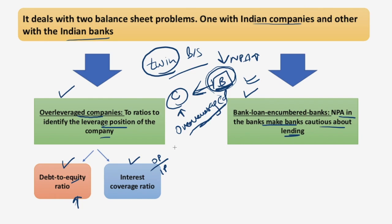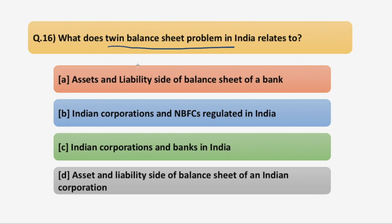Presently in India, there is no such twin balance sheet problem because the debt-equity ratio and interest coverage ratio are both at acceptable levels. However, Indian corporations are still not willing to invest, and the possible reasons behind it could be economic uncertainty or the demographic dividend converting into a demographic liability. So our correct answer to the first question is option C — Indian corporations and banks in India.